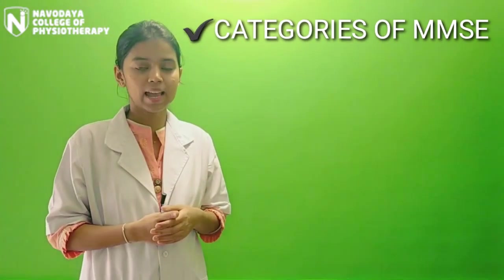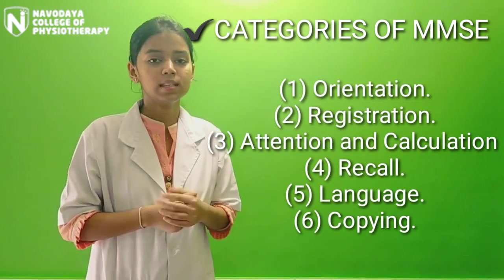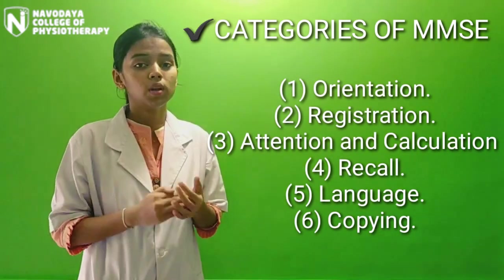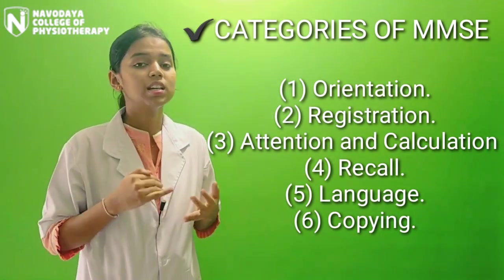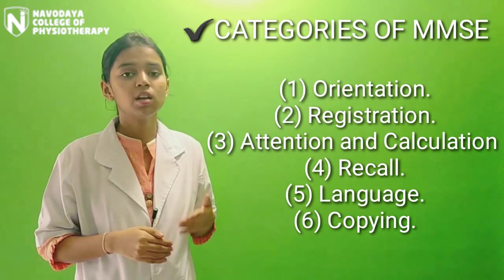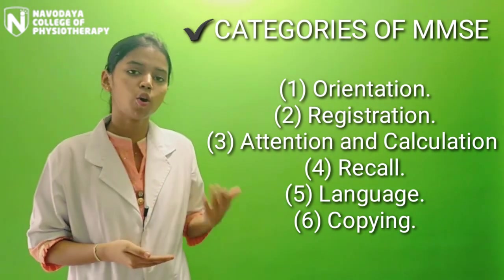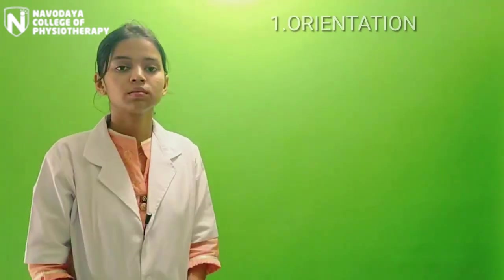There are 6 categories in MMSE. These are: Orientation, Registration, Attention and Calculation, Recall, Language, and Copy.